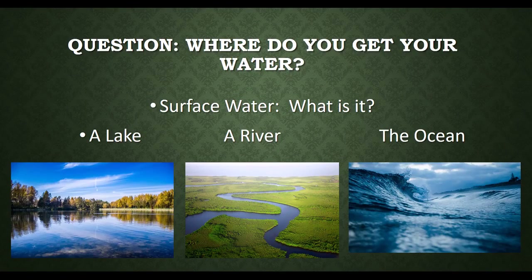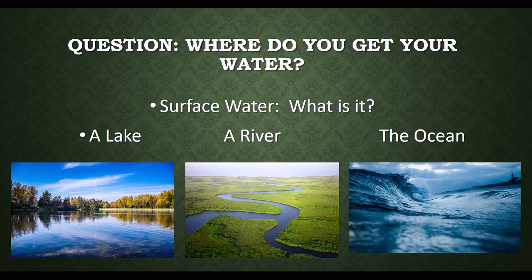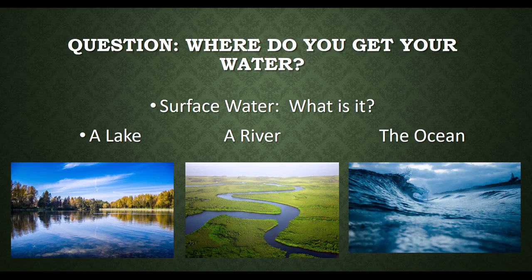So first, let me ask you a question. Where do you think your drinking water comes from? A lake? A river? The ocean? Well, some of you may get your water from those places. Water from rivers, lakes, and streams is what we call surface water because it is on the surface of the ground where we can see it. Ocean water is surface water too, but we can't drink ocean water because it's so salty.